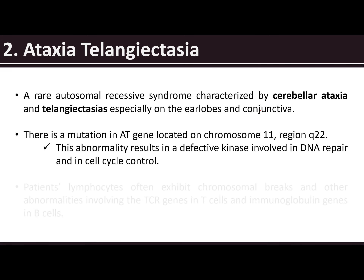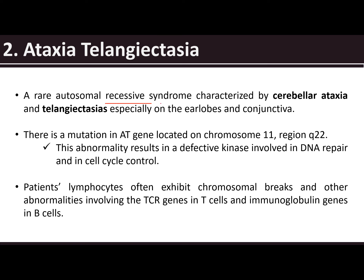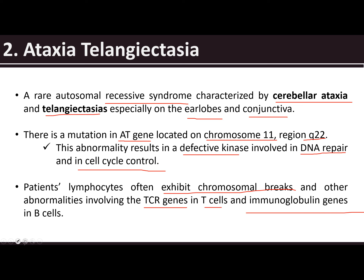For ataxia telangiectasia, this is a rare autosomal recessive syndrome characterized by cerebellar ataxia and telangiectasia, especially on the earlobes and conjunctiva. It is caused by a mutation in the AT gene located on chromosome 11, region Q22. This results in a defective kinase involved in DNA repair and cell cycle control. Patients' lymphocytes often exhibit chromosomal breaks involving T cell receptor genes and immunoglobulin genes in B cells.